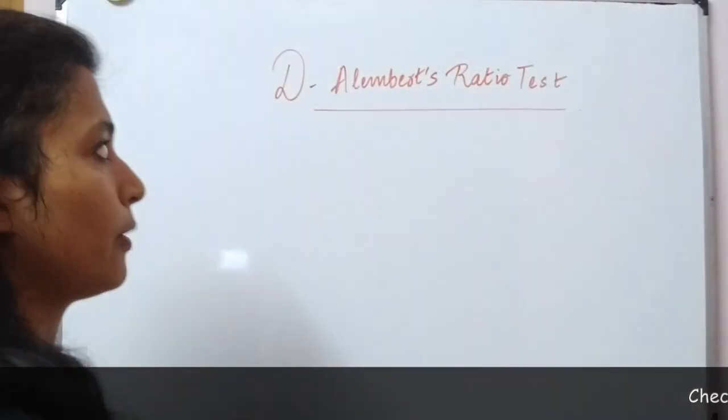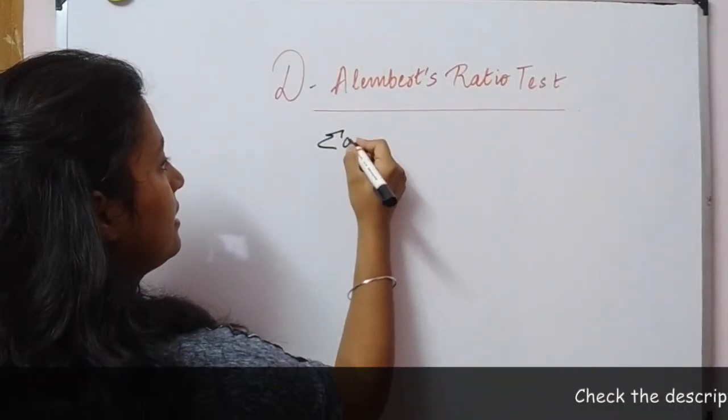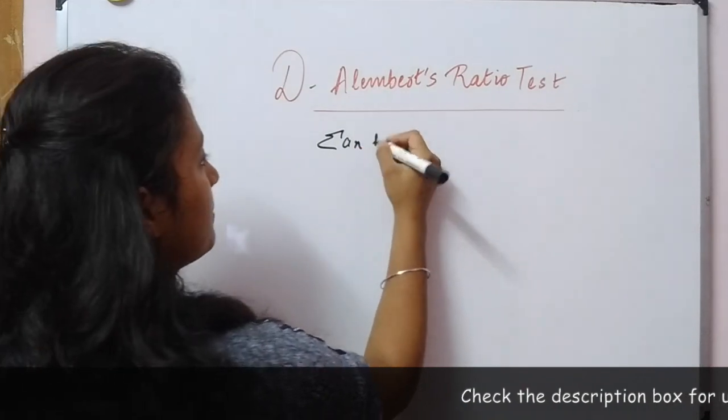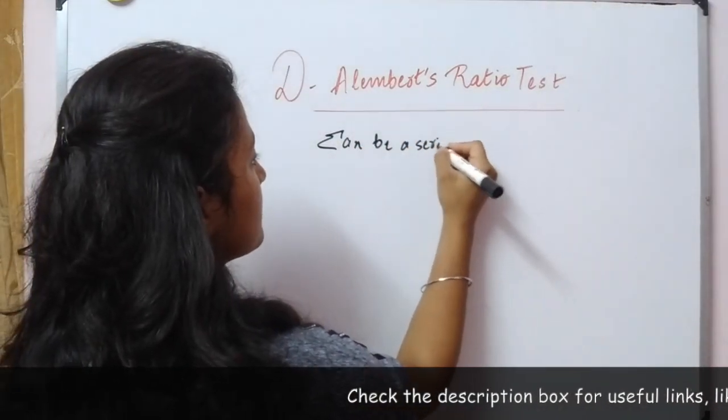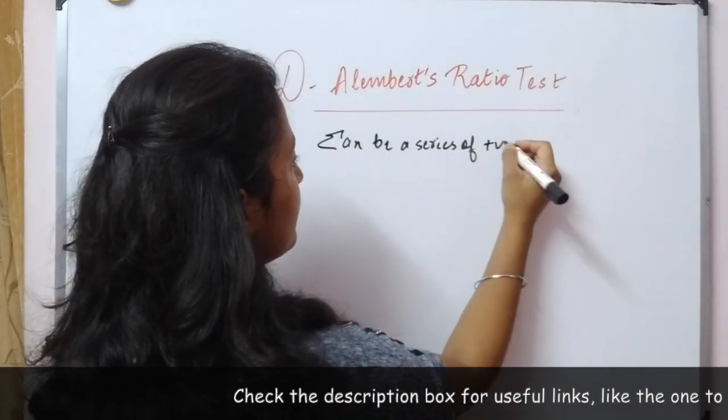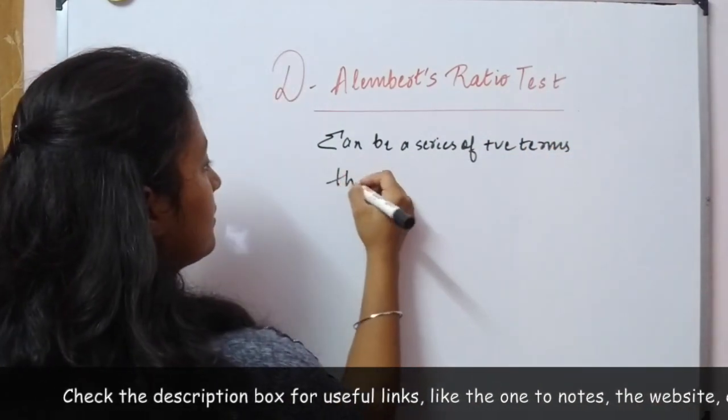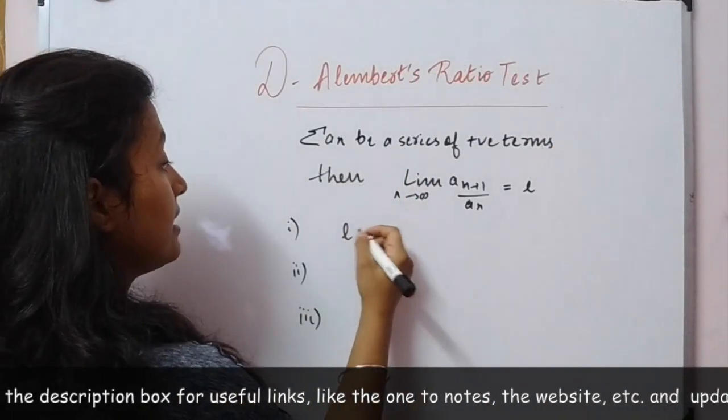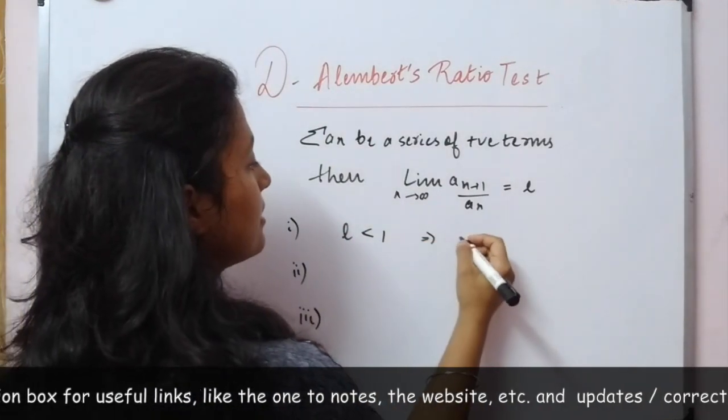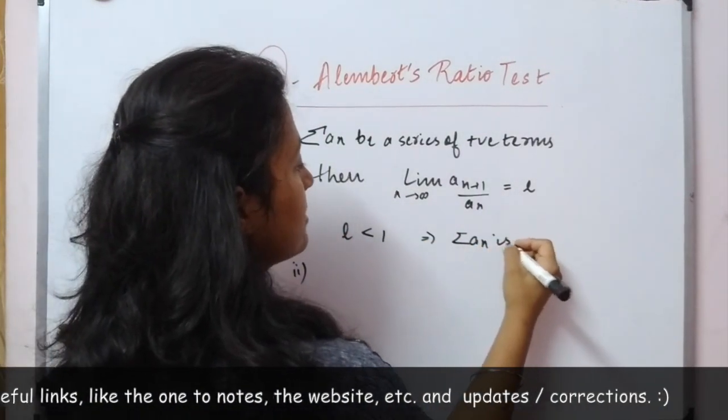If we consider a series of positive terms, let Σaₙ be a series of positive terms. Then if L is less than 1, this implies the series is convergent.